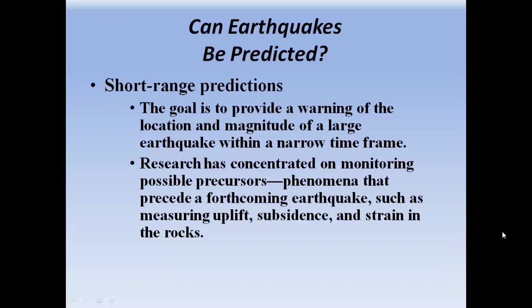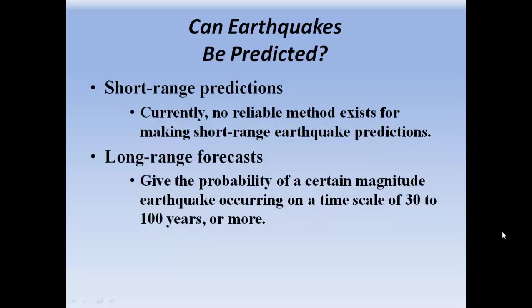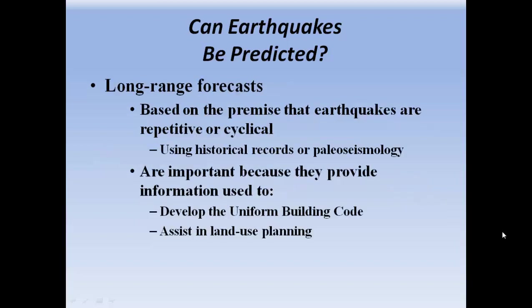Can earthquakes be predicted? Short-range predictions aim to provide a warning of the location and magnitude of a large earthquake within a narrow timeframe. Research is concentrated on monitoring possible precursors — phenomena that precede a forthcoming earthquake — such as measuring uplift, subsidence, and strain in rocks. Currently, no reliable method exists for making short-range earthquake predictions. Long-range forecasts give the probability of a certain magnitude of earthquake occurring on a timescale of 30 to 100 years or more, based on the premise that earthquakes are repetitive or cyclical. Historical records and paleoseismology are important because they provide information used to develop uniform building codes and assist in land use planning.